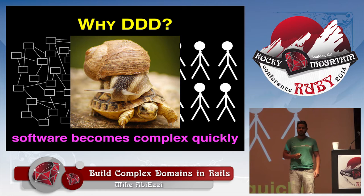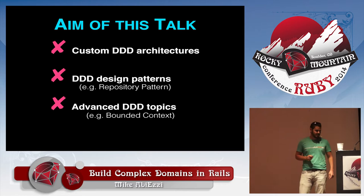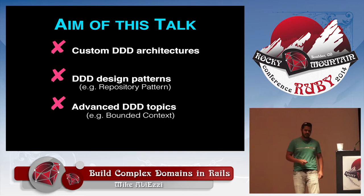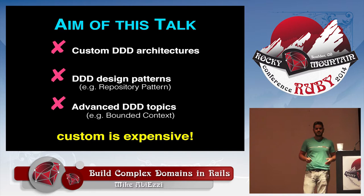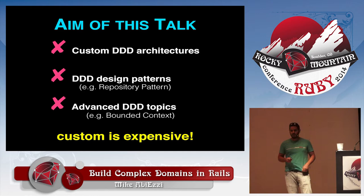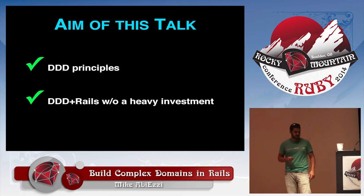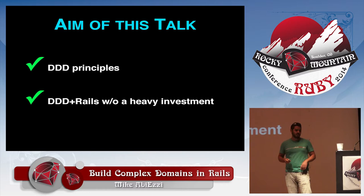So what this talk is not about. There are a lot of topics on DDD and I want to set expectations. It's not about a custom architecture for domain driven design. It's not about design patterns specific to DDD such as the repository pattern. And it's not about advanced topics such as what a bounded context is. Custom is expensive. If you're a startup, there's a reason startups like Rails — because it's fast. We don't necessarily want to go custom right away; we may not have even proven our market. So we've got to be very conscious about when we do these custom things. They're all great, but there's a time and place for it. What we are going to talk about is taking DDD principles and applying them to a Rails application in a way that allows you to transition to a custom architecture later.